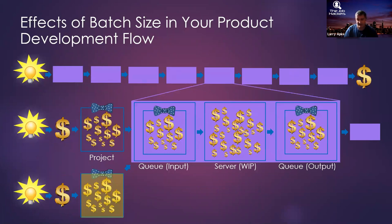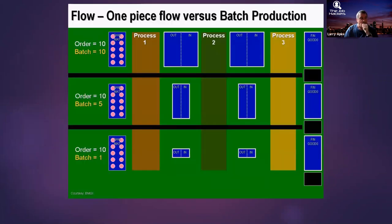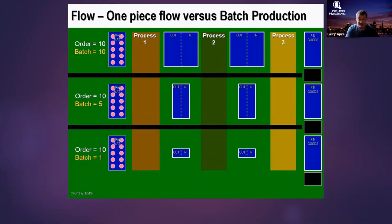Batch size is represented in the G-Goat as a project. A project is a batch — usually quite a large batch — and we're moving that big batch through various queues and stations. I want to share a simple but mind-blowing animation about the difference in batch size and how it reflects on the ability to make money. We're going to do things in batches of 10, 5, and 1, moving through three different processes until we get to finished goods — at which point we have a saleable product.